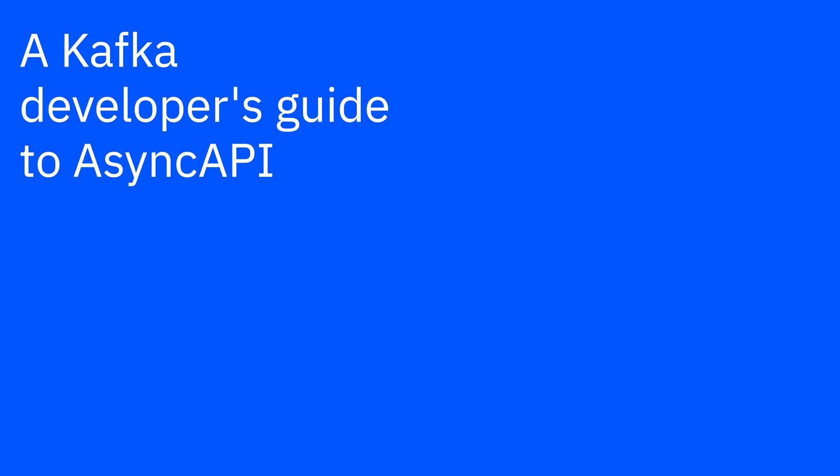In this video, I'm going to give an introduction to Async API from the perspective of a Kafka developer. I'm assuming that you're a Kafka developer who has an application that is producing or consuming messages with a Kafka topic, and you want to describe what your application is doing and how it's using Kafka.